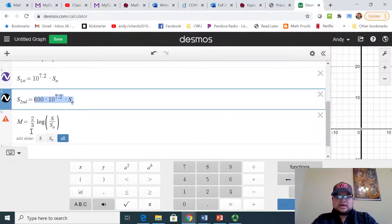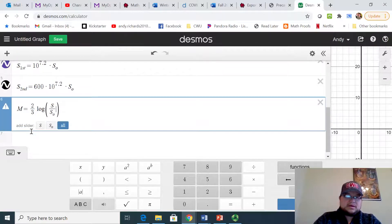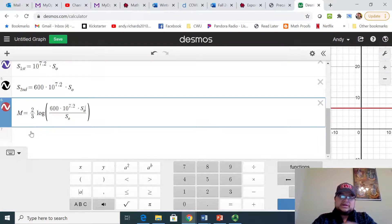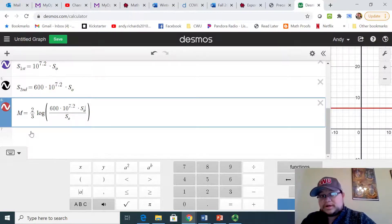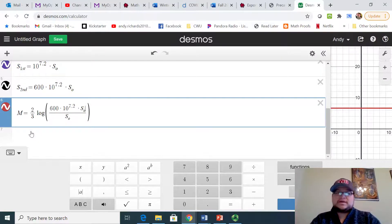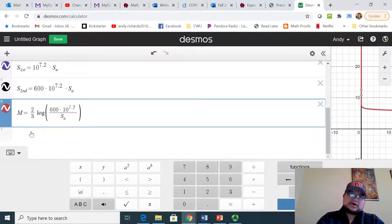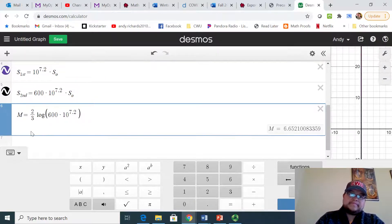We can substitute that in for our S there, and notice that because we use this format, we'll have that S sub zero cancel on top and bottom, and then we're just left with something that we can actually calculate.